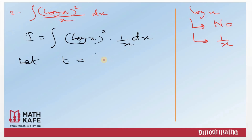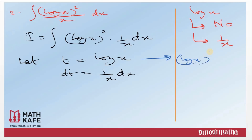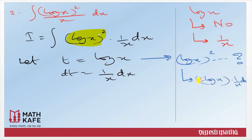Then substitution: let t equal to log x, so dt equals (1/x) dx. Some of you might be thinking: why not take (log x)² as the substitution? If you try that, the derivative of (log x)² is 2 log x · (1/x) dx. You have taken (log x)² as the substitution but you are left with 1/x dx, whereas your derivative is becoming 2 log x · (1/x) dx. That means you are missing the 2 log x term and it becomes more complicated. So we use only t equal to log x, whose derivative 1/x dx is present. Log x is replaced by t and 1/x dx is replaced by dt.